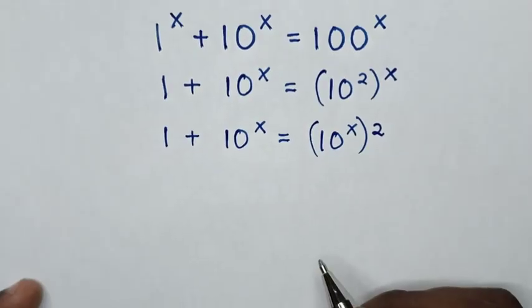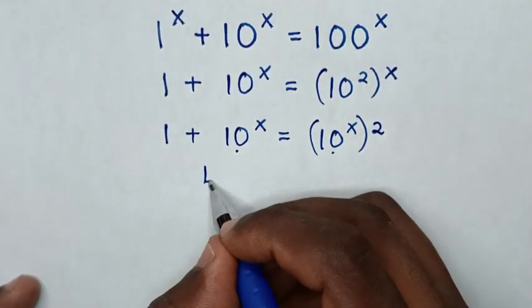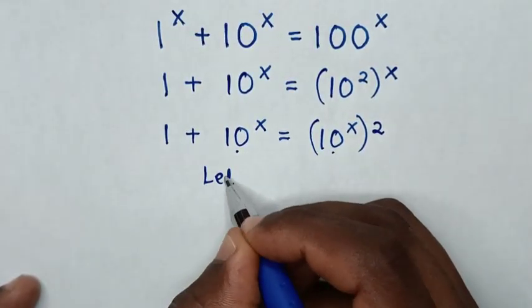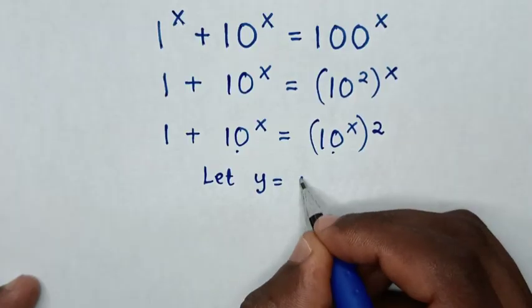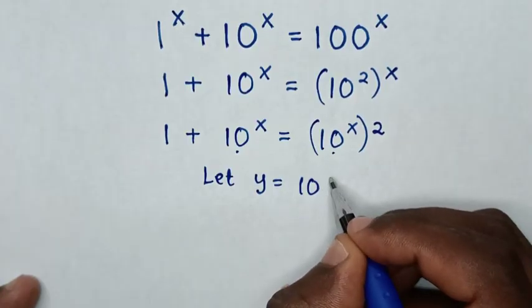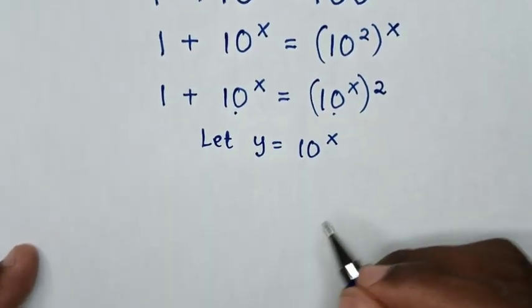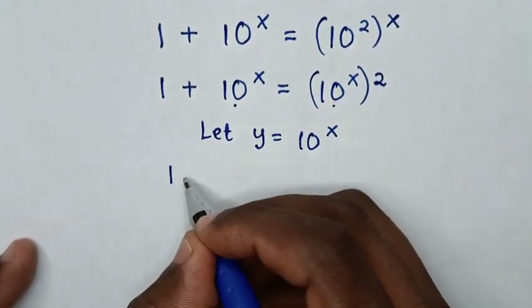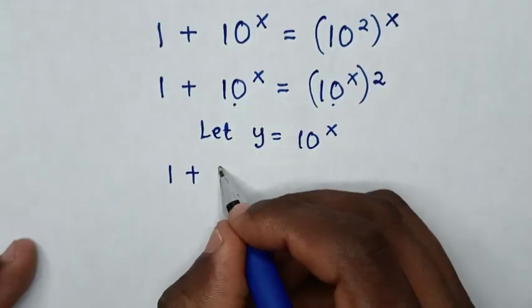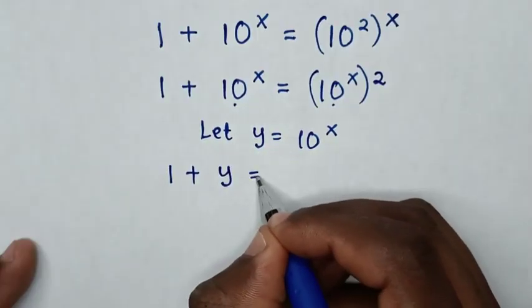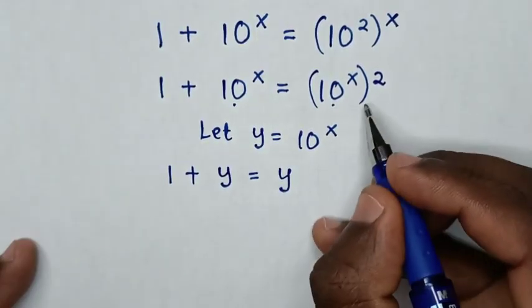Then in the next step, 10^x is common, so we let y = 10^x. Then our equation becomes 1 plus y equals y².